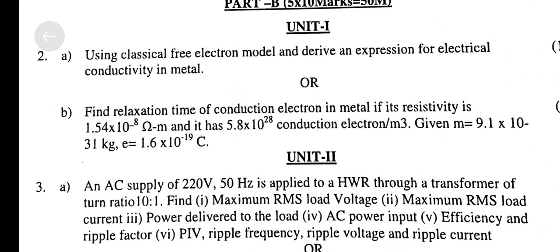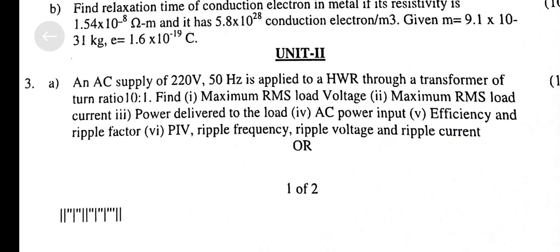Part B, Second Question. A. Using the Classical Free Electron Model, derive an expression for Electrical Conductivity in Metal. B. Find the relaxation time of conduction in a metal if its resistivity is 1.54 x 10^-8 ohm-meters and electron density is 5.8 x 10^28 per meter cube, given M = 9.1 x 10^-31 kg, e = 1.6 x 10^-19 coulombs.